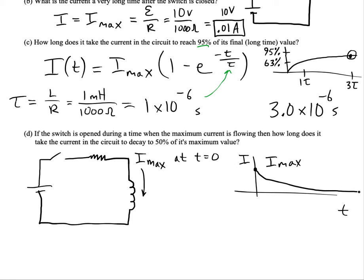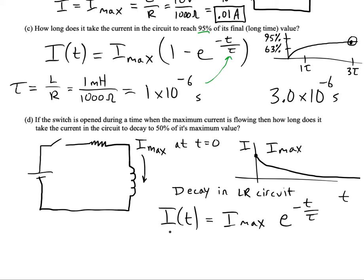So this is what current will do with time in this situation. It's going to start off at I max and then we'll decay towards zero as time goes on. The formula that goes along with that is for current decay in an LR circuit. We'll have I equals I max e to the negative t over tau. So we just need to put in a 0.5 over here. And we'll have this. I'll use the same time constant value. And we just need to solve that for t.